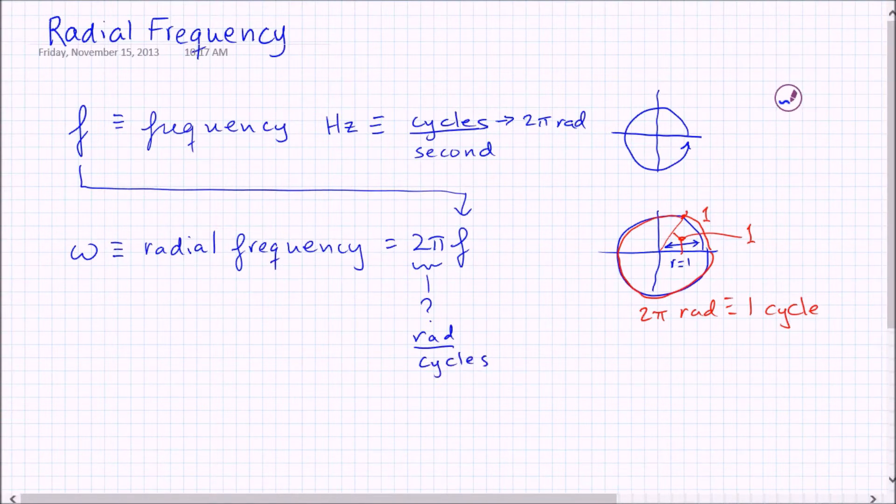There's two pi radians in a cycle, and so when you take the frequency in cycles, you've got to multiply by two pi to get the frequency in radians per second. So this radial frequency has units of radians per second.